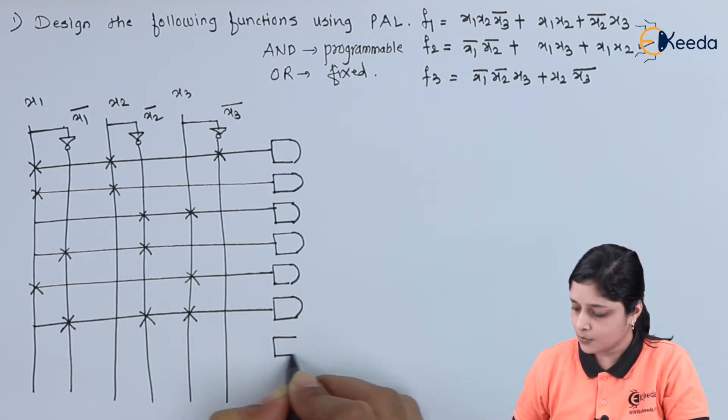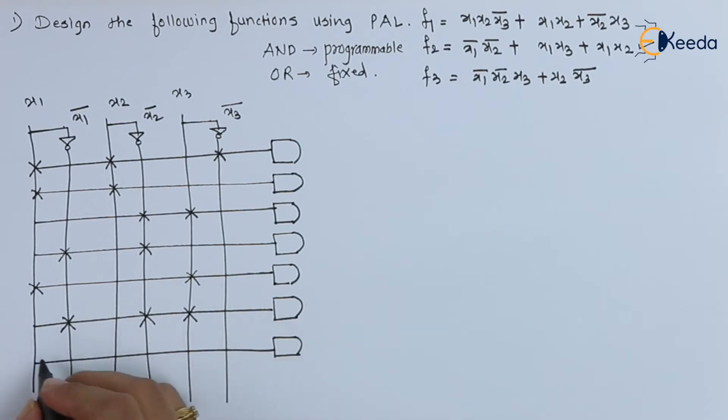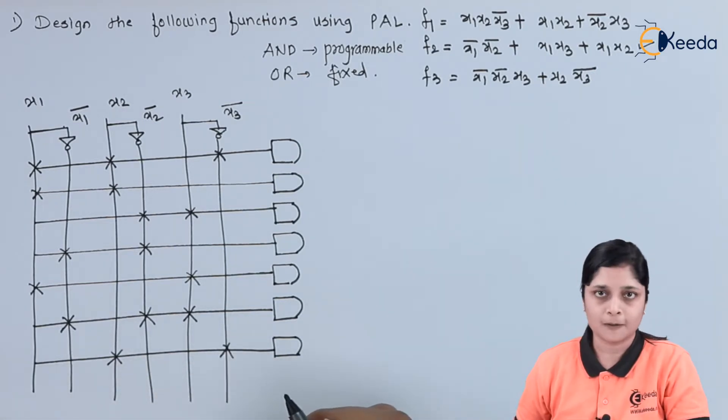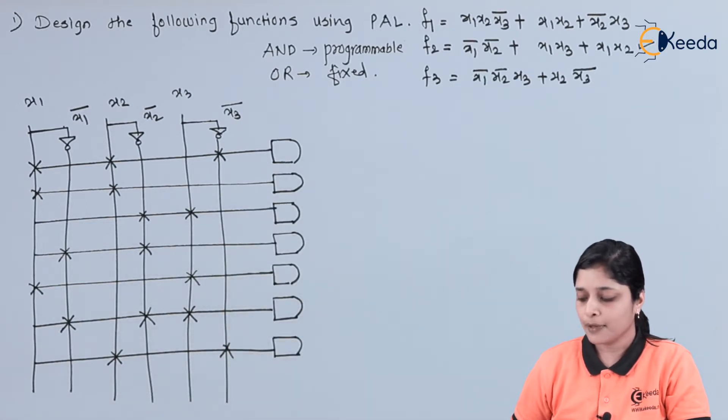And last is for x2 x3 bar. So this is all about the AND structure.